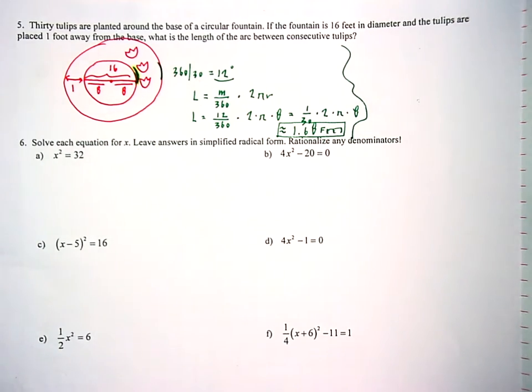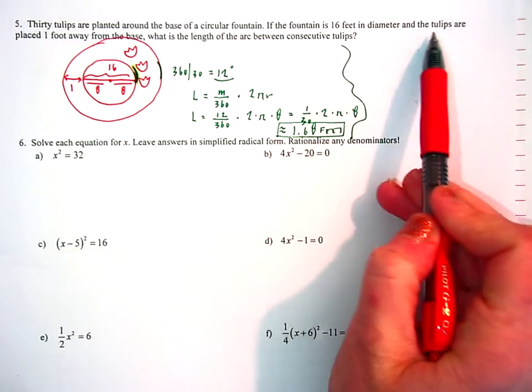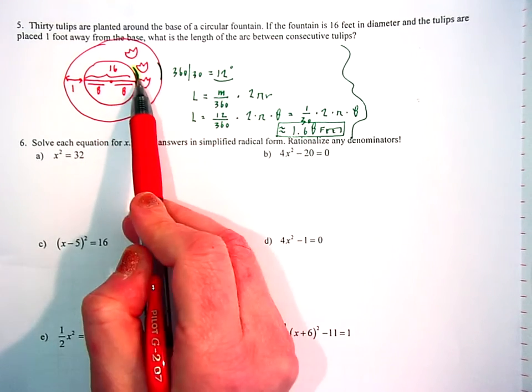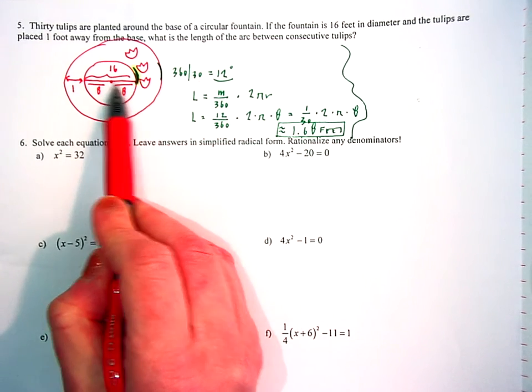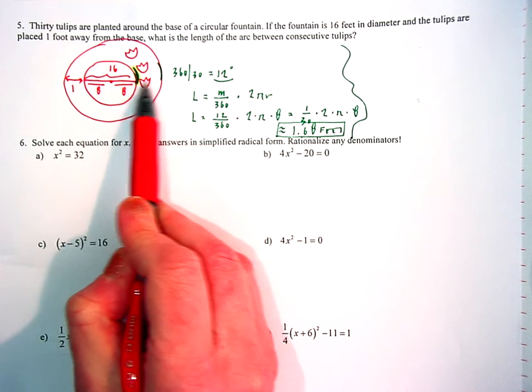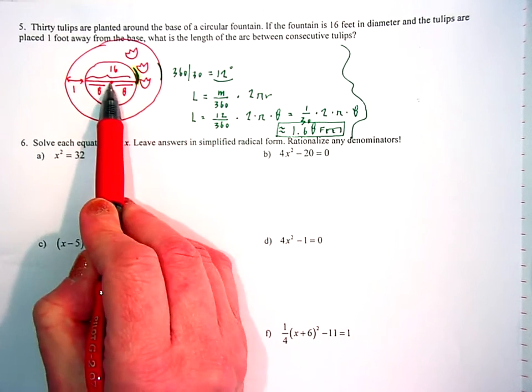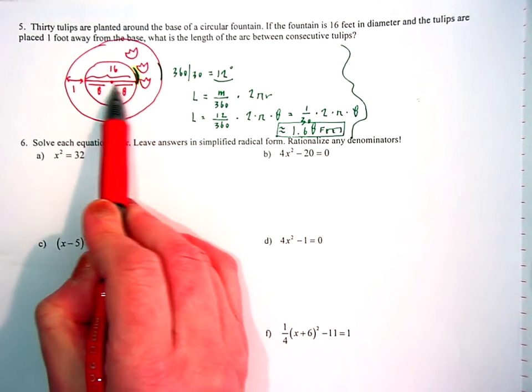But the other interpretation, right, is saying, well, why are they telling us tulips are placed one foot away from the base? So it's implying that, well, here's my eight feet, but here's my extra foot out to here. Maybe they're planted right in here. So then my radius would be 9 and not 8.